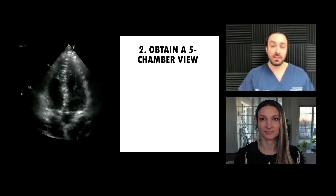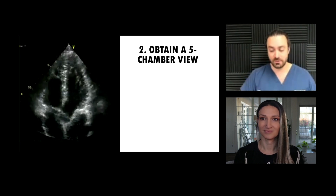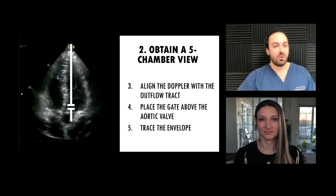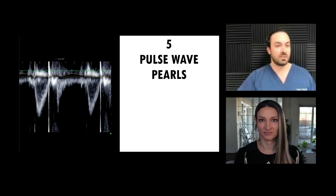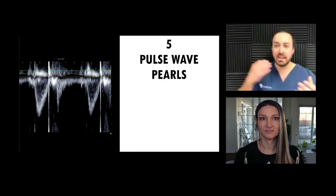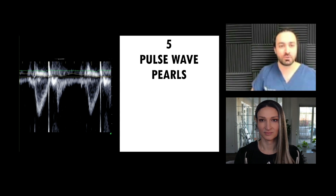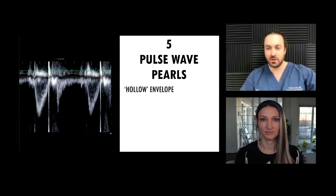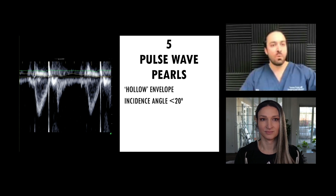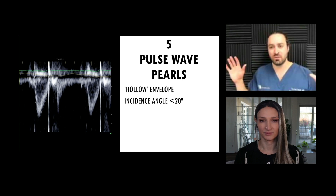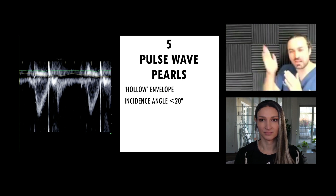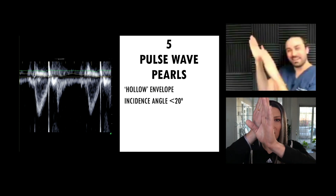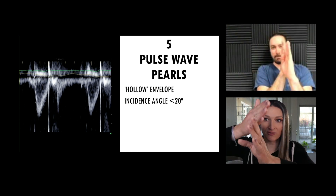Then we're going to get our five-chamber view — the four-chamber view is good, but truthfully it's the five-chamber that's the best. We're going to align our Doppler with the outflow track, right proximal to the valve, and hit that pulse wave Doppler button and trace the envelope. We get this signal — you'll need a little familiarity with how to get a good pulse wave signal. What we see is a nice hollow envelope: a crisp outline with less signal in the middle. We want our angle of incidence less than 20 degrees — this is true for all things in echocardiography. If the blood is flowing this way, we want to measure it the same way, meaning no more than a 20-degree difference between flow and your Doppler angle.